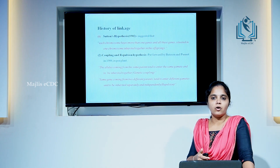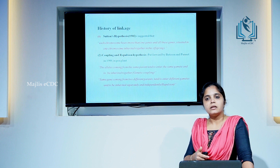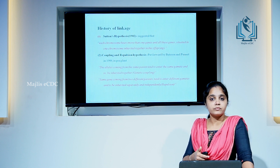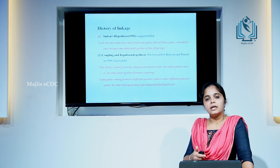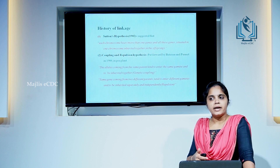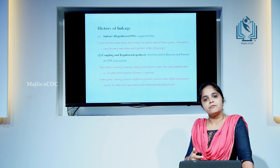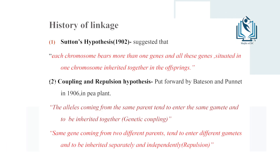Next, we discuss the history of linkage. In 1911, Morgan proposed the theory of linkage, but before that, this theory was proposed under different names. The first one is the Sutton hypothesis. In 1902, Sutton suggested that each chromosome bears more than one gene, and all genes situated in one chromosome are inherited together to their offspring. Unfortunately, he was unable to explain his findings.